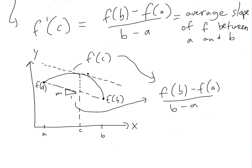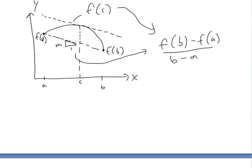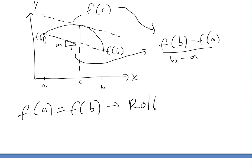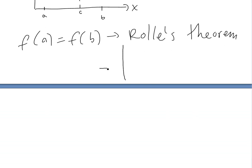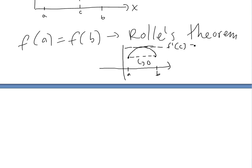This is similar to Rolle's theorem, which I showed before. If f of a and f of b are equal to each other — so if f of a equals f of b — this is just a part of Rolle's theorem, which I showed in my earlier video. In this case, if they're equal to each other and you have a function like this, this average slope is zero, and thus f prime of c is equal to zero.